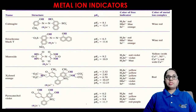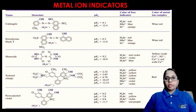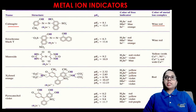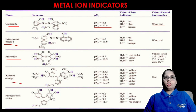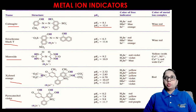The structures, pKa values, and color changes of PM indicators are important. For example, calmagite gives a wine red color after metal complex formation and is used in basic pH (pKa 8.1 and 12.4). Eriochrome black T, murexide, xylenol orange, and pyrocatechol violet are other PM indicators used in different pH ranges, each showing a distinct color change at the endpoint.